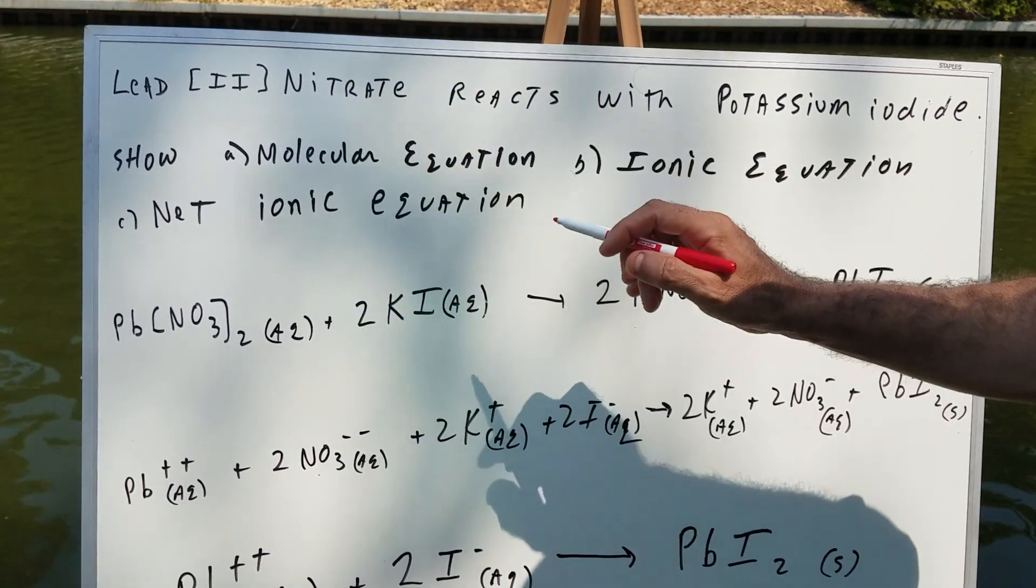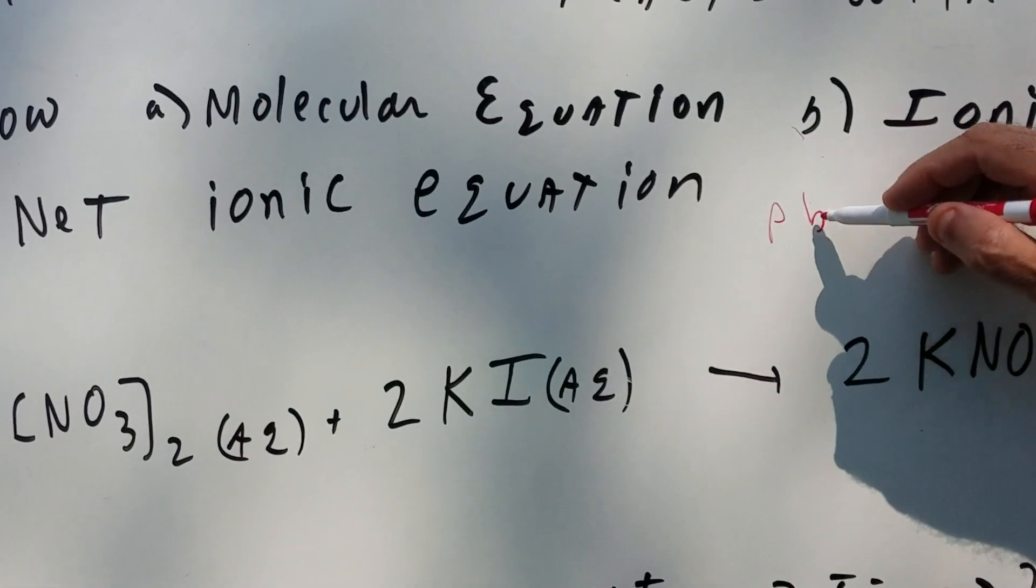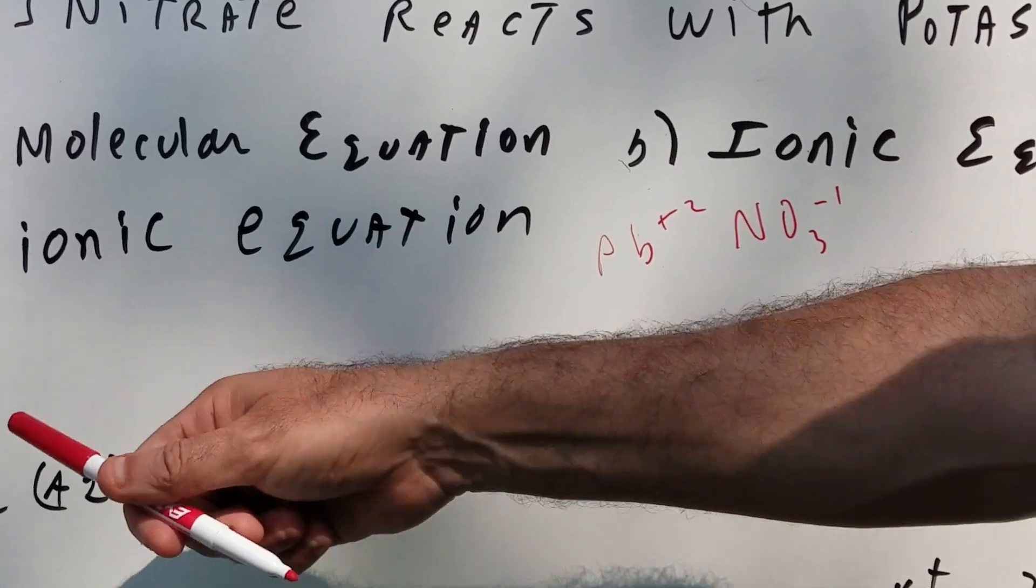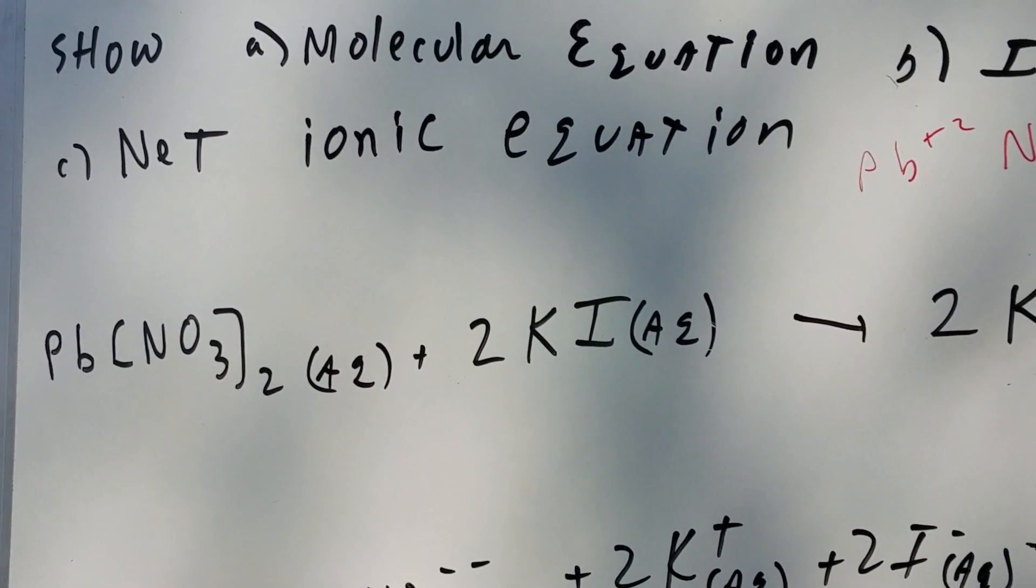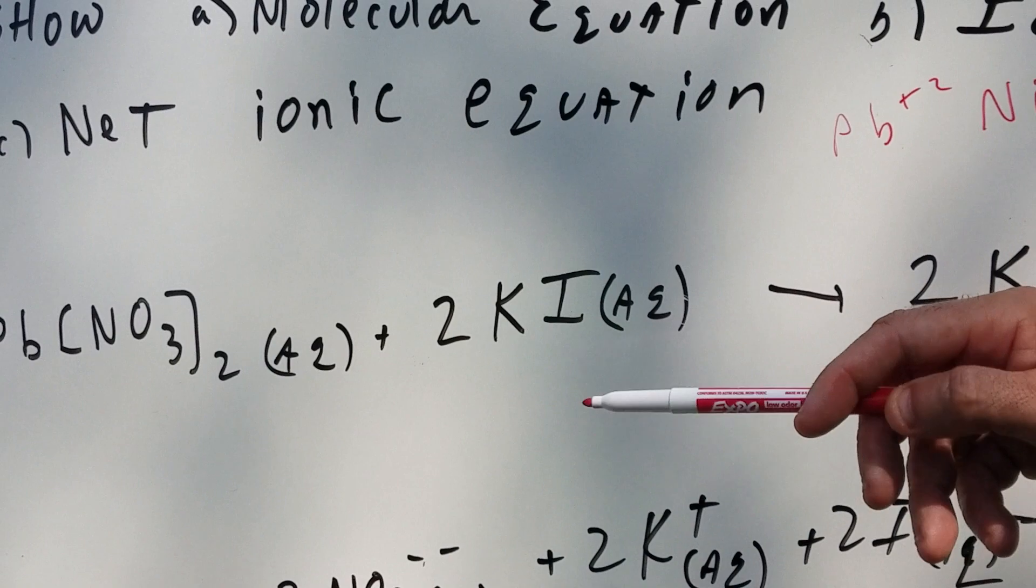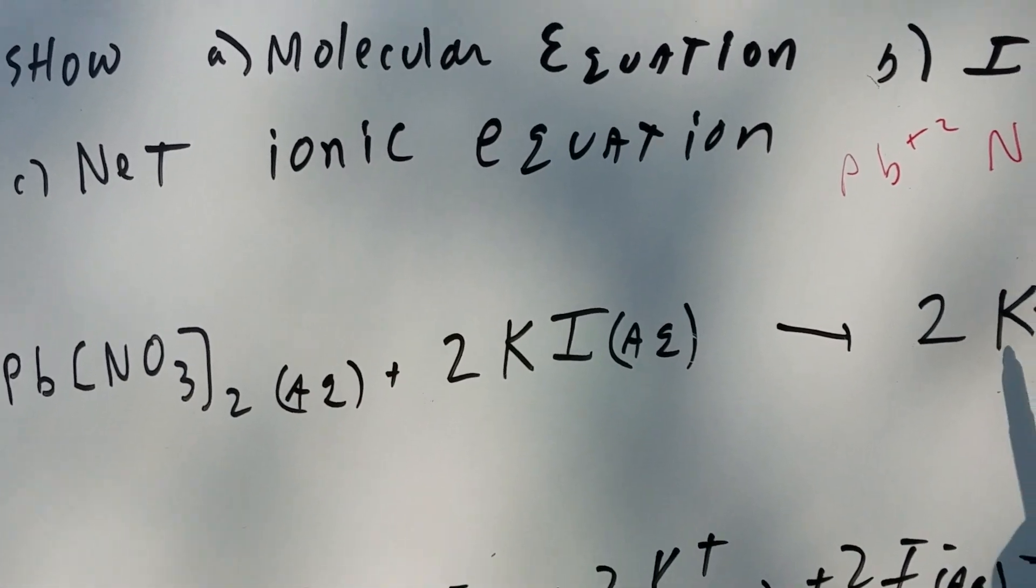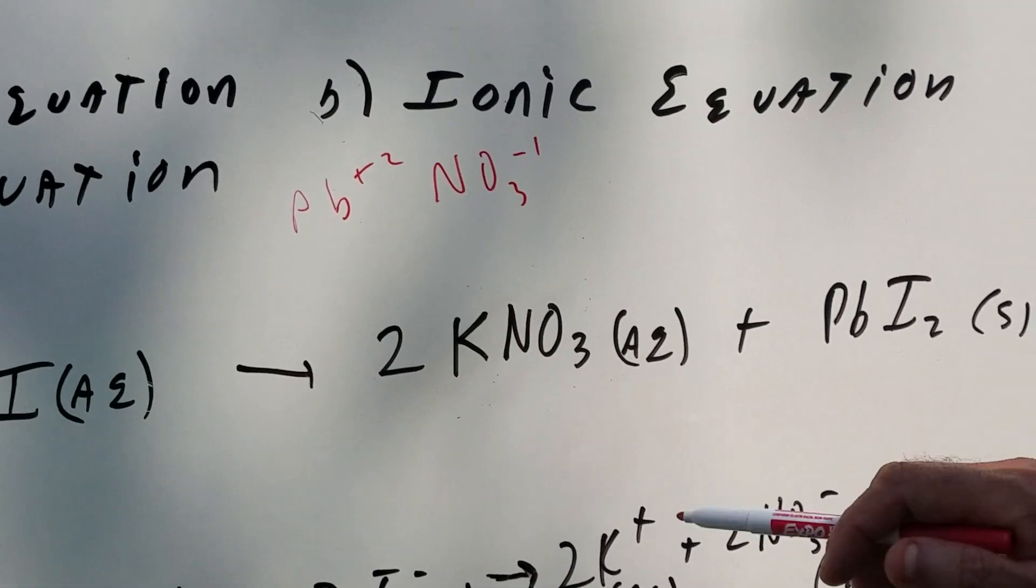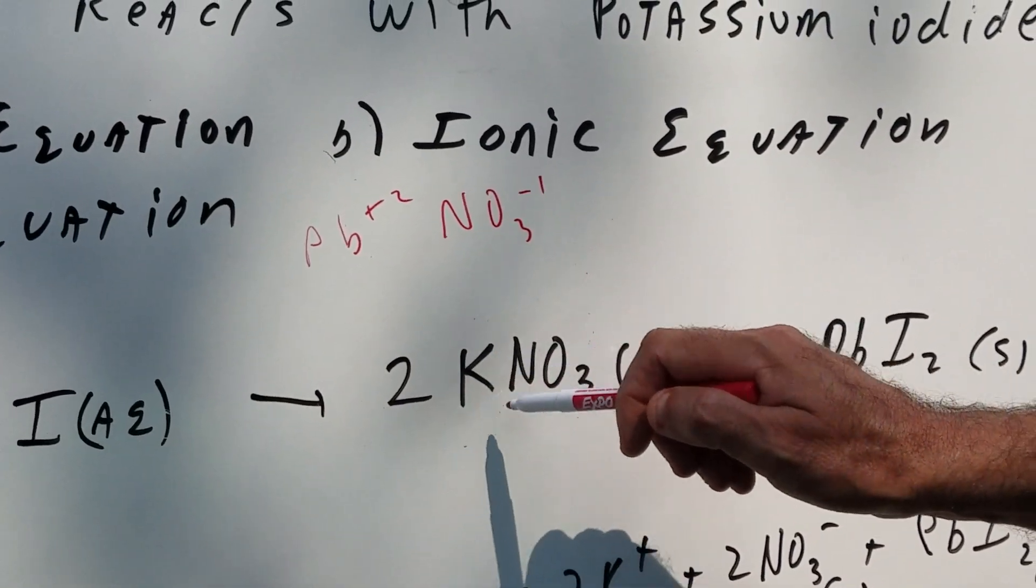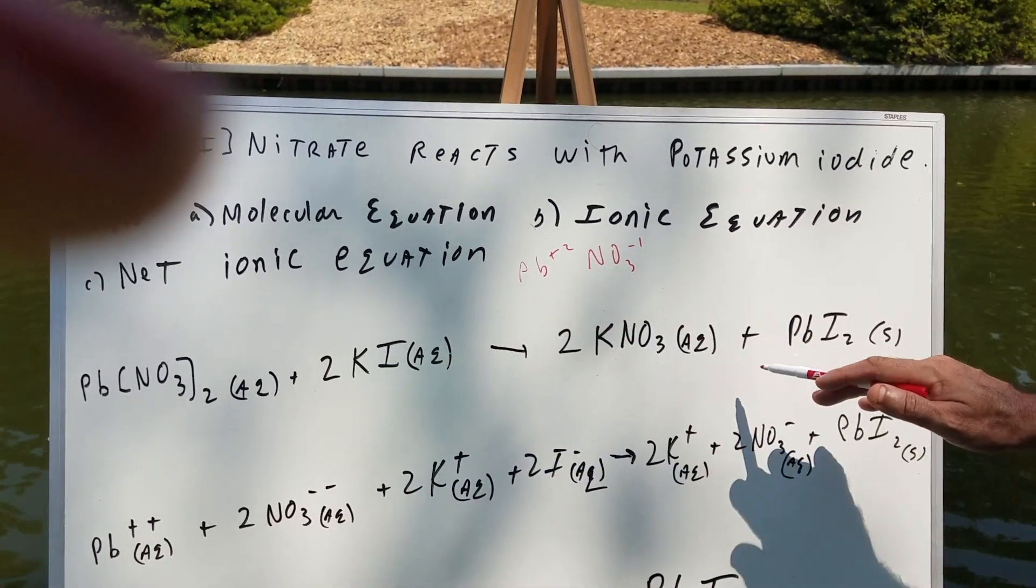Now the first thing I'm going to do is write out the formula for lead II nitrate. You should be familiar with the rules of this. For example, lead 2 is Pb+2, nitrate is NO3-1, and you crisscross and you came up with that. So we take lead II nitrate and potassium iodide is KI, and what you're going to do is exchange parts. So the Pb goes with the I and the K goes with the NO3, and that gives you KNO3 and PbI2. There's 2 nitrates here, so you put a 2 in front of this to balance it, and then this gives you 2 potassiums. I put a 2 on this side and you check to make sure that everything is balanced.